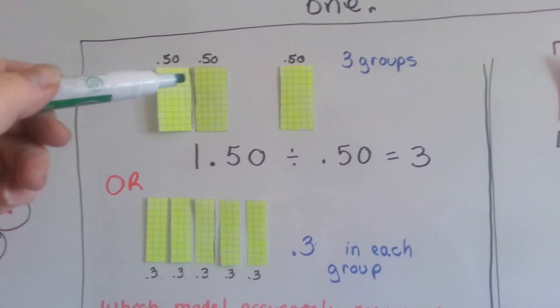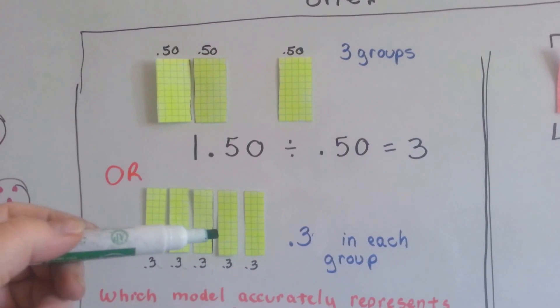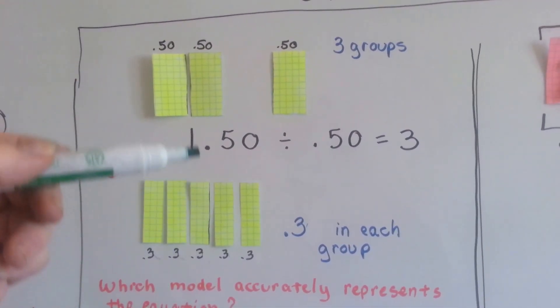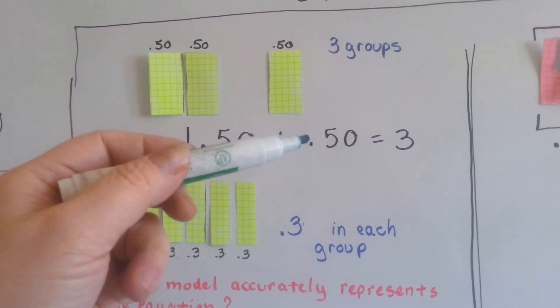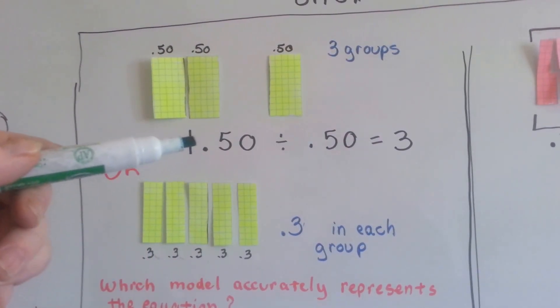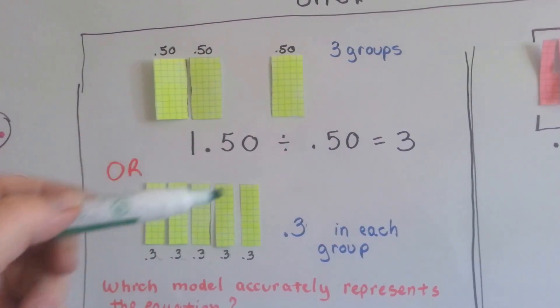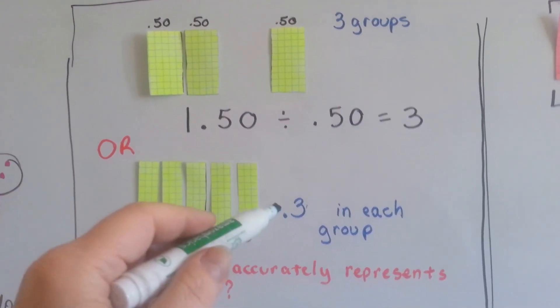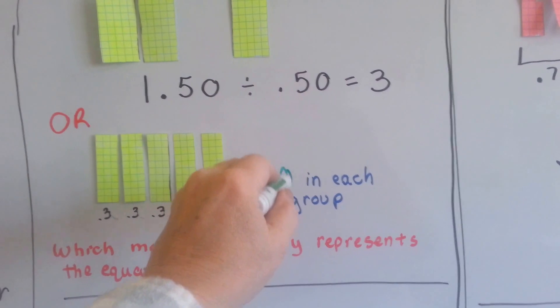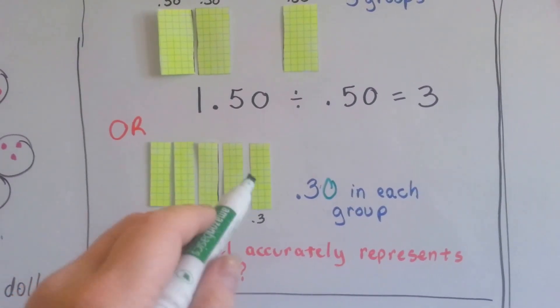Which is the correct model? This group up here or this group down here? Do we have 1.50 divided into 50 hundredths? Or do we have 1.50 divided into five that makes 30 hundredths in each group of the five?